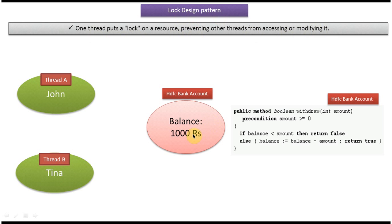You can see an HDFC bank account and in that account the balance is 1000 rupees. This bank account is shared by two people — one is John, another one is Tina. Both are husband and wife, so they are sharing this account. At any point of time they can withdraw only 1000 rupees from this bank account.